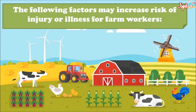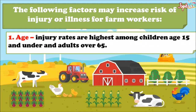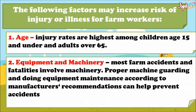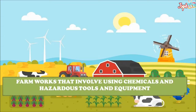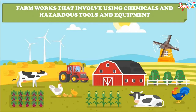The following factors may increase the risk of injury for farm workers. Age — injury rates are highest among children age 15 and under, and adults over 65. Most farm accidents and fatalities involve machinery. Proper machine guarding and doing equipment maintenance according to manufacturer's recommendations can help prevent accidents. Farm work that involves using chemicals, hazardous tools, and equipment also poses significant risks.